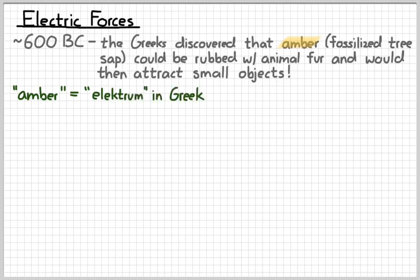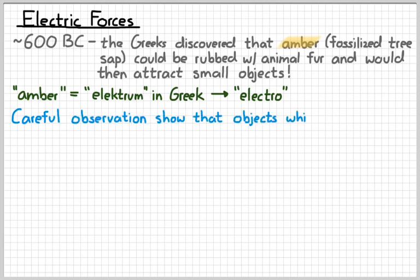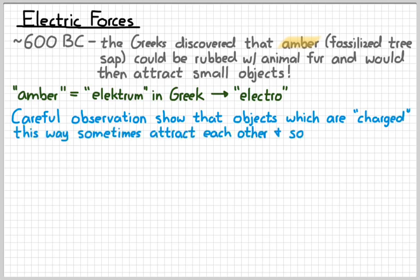So this fossilized tree sap stuff is actually kind of important in science. But anyway, the Greek word for amber is electrum, which today becomes our prefix elektro. So that's kind of sort of the beginning of this whole electricity story.